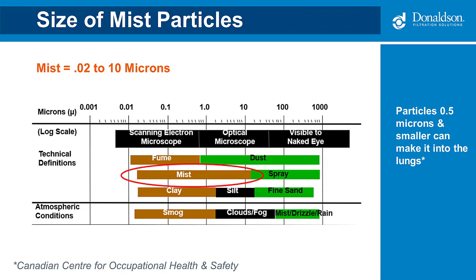To better understand the properties of metalworking fluid mist, we need to know a little bit more about particle sizes. As you can see from the chart, mist is very small in size, ranging from 0.2 to 10 microns. It would need to be viewed through an optical or scanning electron microscope and it's not visible to the naked eye. Mist particles under 5 microns will become an aerosol and will remain airborne indefinitely.